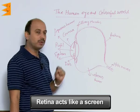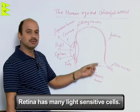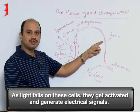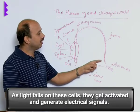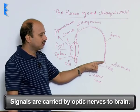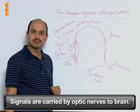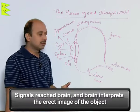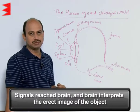Retina acts like a screen; it has many light-sensitive cells. As light falls on the retina, the light-sensitive cells get activated and generate electrical signals. These electrical signals are carried by the optic nerves to the brain, which then interprets the erect image of the object.